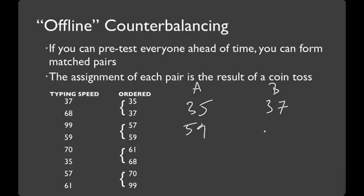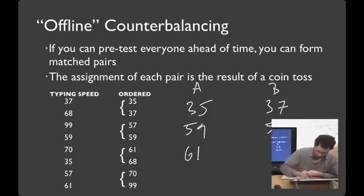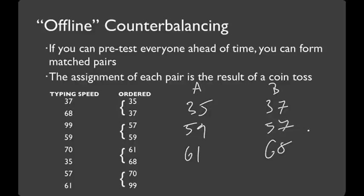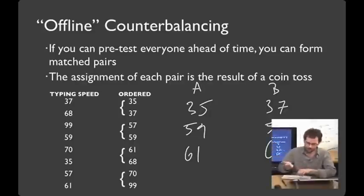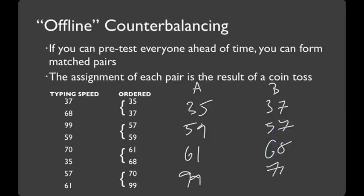So, 59 goes here. Third one's heads. So, that gives us 61, 68. And tails. And that gives us 99 goes here, and 70 goes here. By doing this matched pairs, you're balancing out the performance of people approximately in each condition. And by having some randomness in there, you're ensuring that you don't get some accidental statistical artifacts that creep in by saying, assign all your odds here and all your evens there.